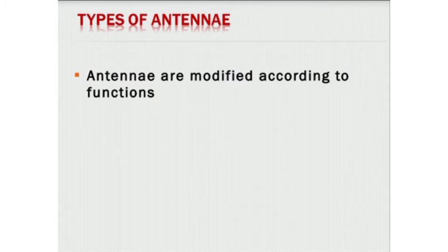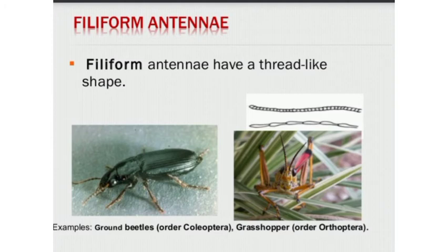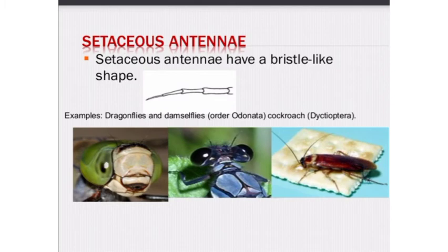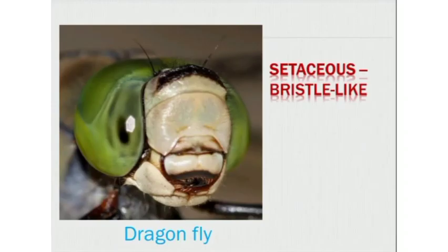Antennae are modified according to their functions. First, we have filiform antennae, which have a thread-like shape. Examples are ground beetles, order Coleoptera, and grasshoppers, order Orthoptera. Next is the setaceous antennae, which have a bristle-like shape. Examples are dragonflies and damselflies, from the order Odonata.